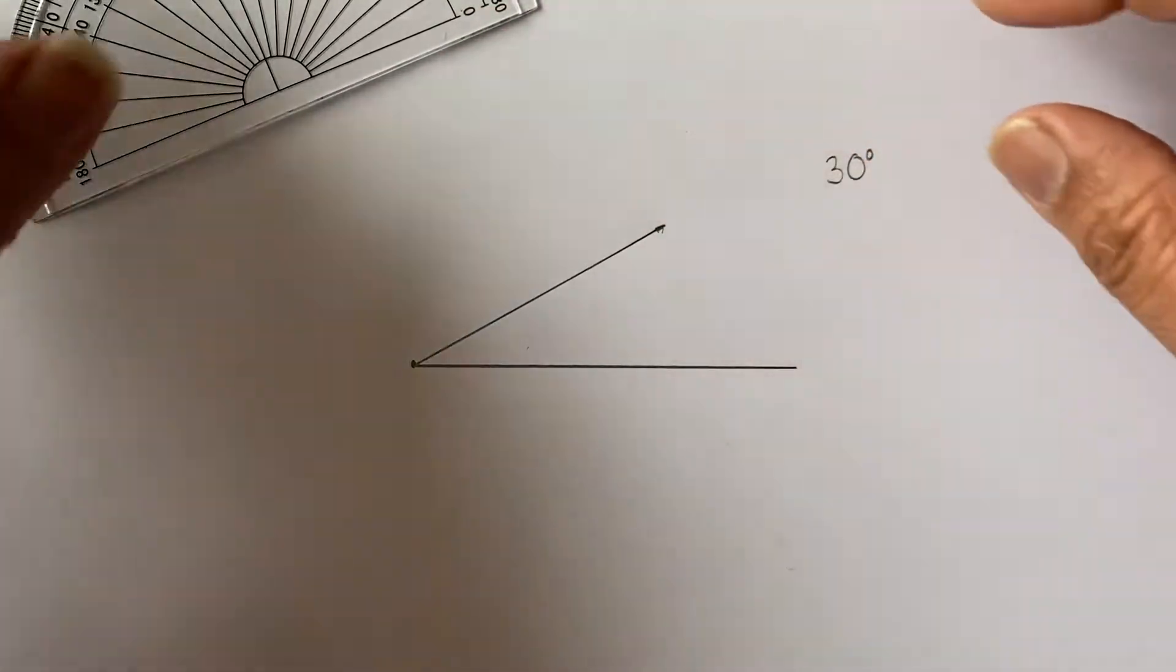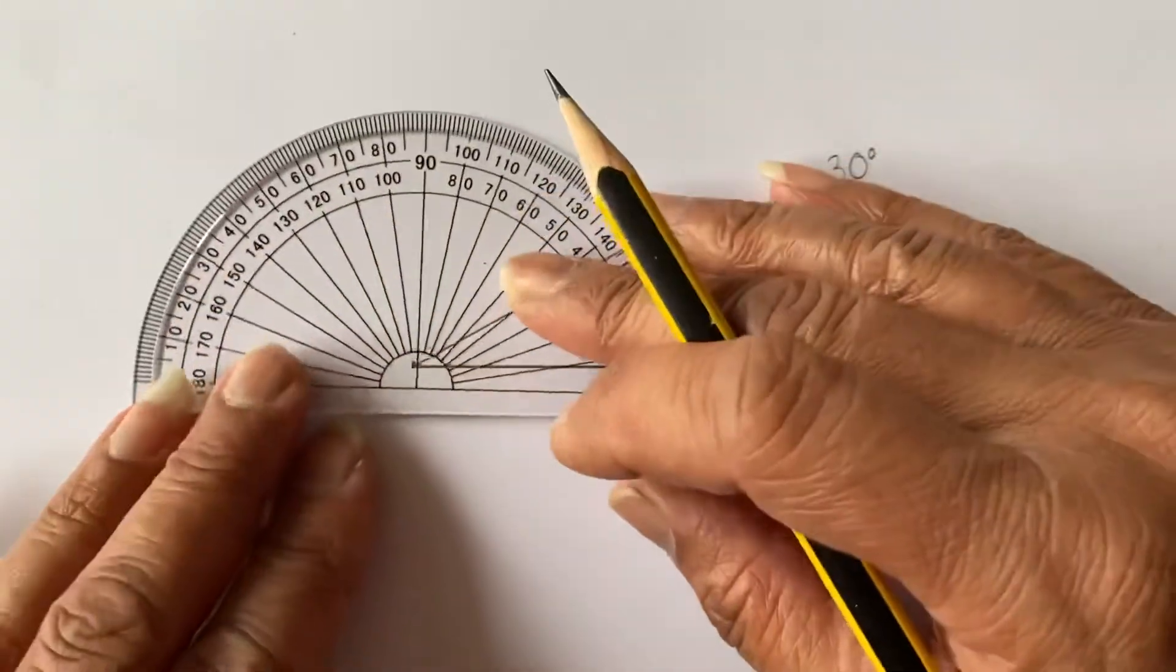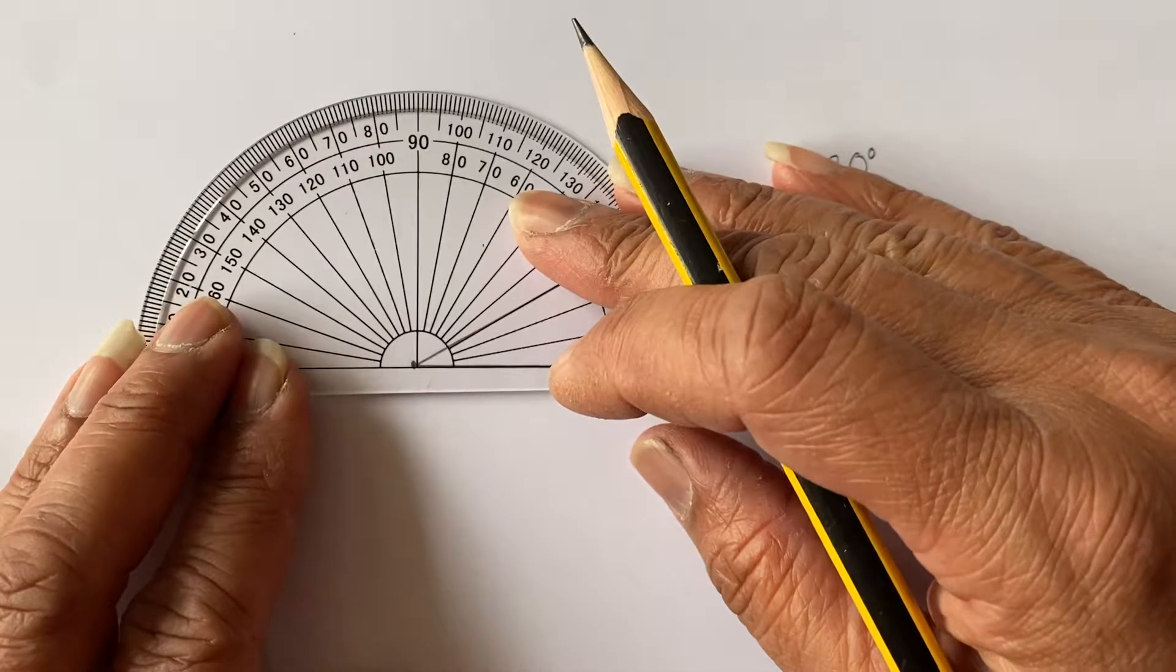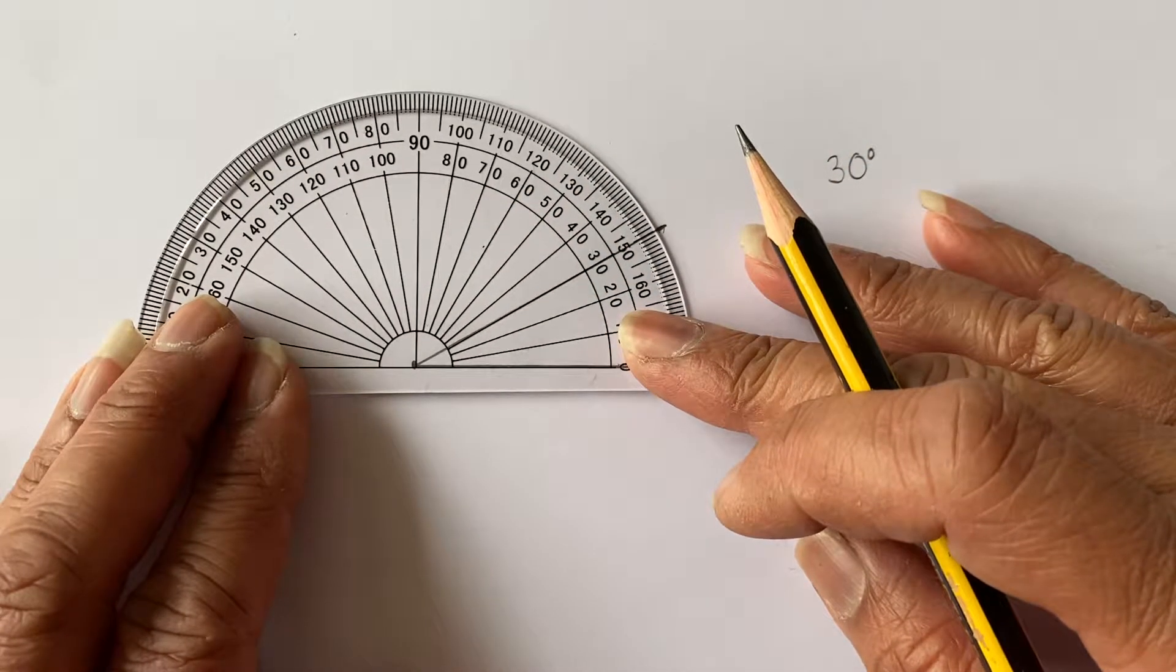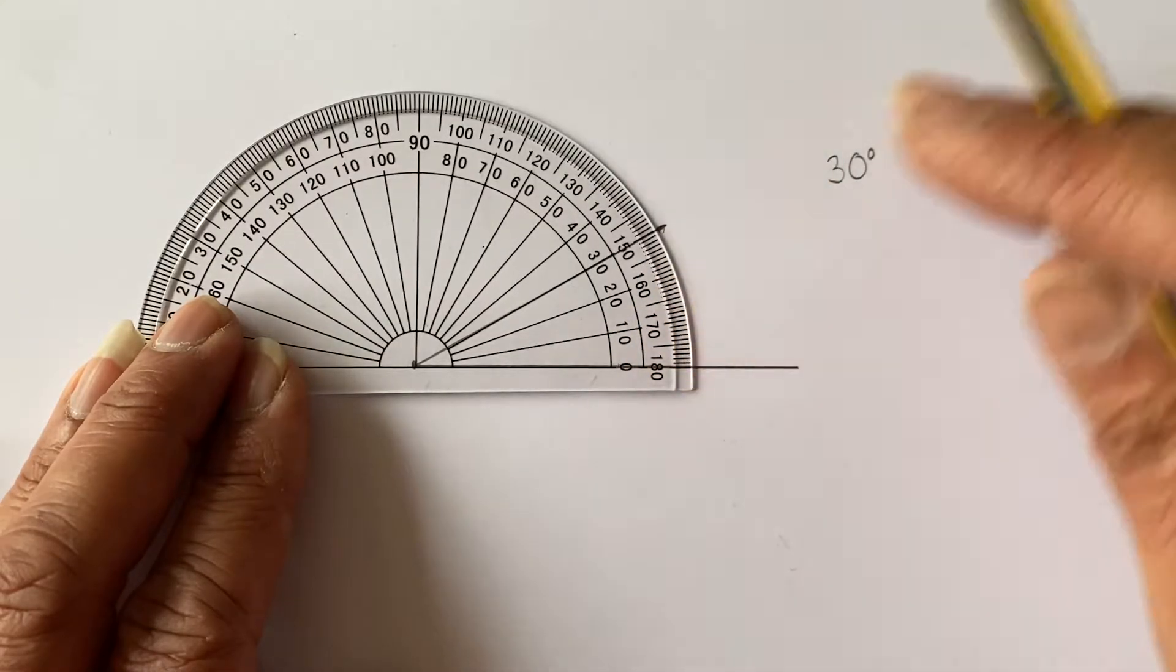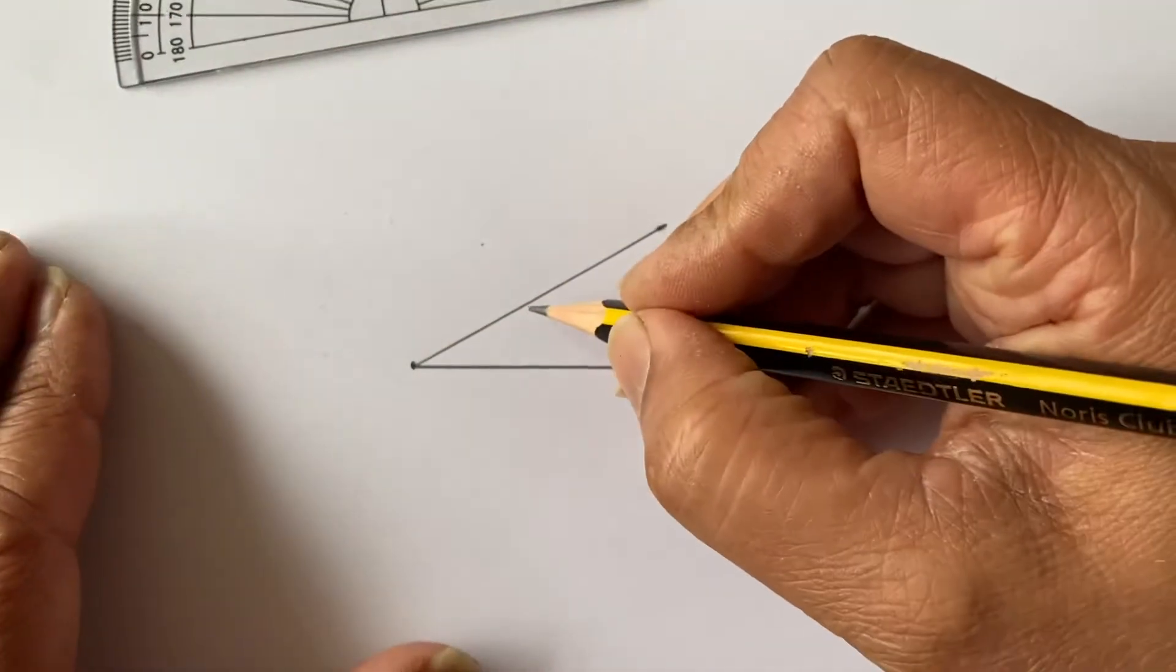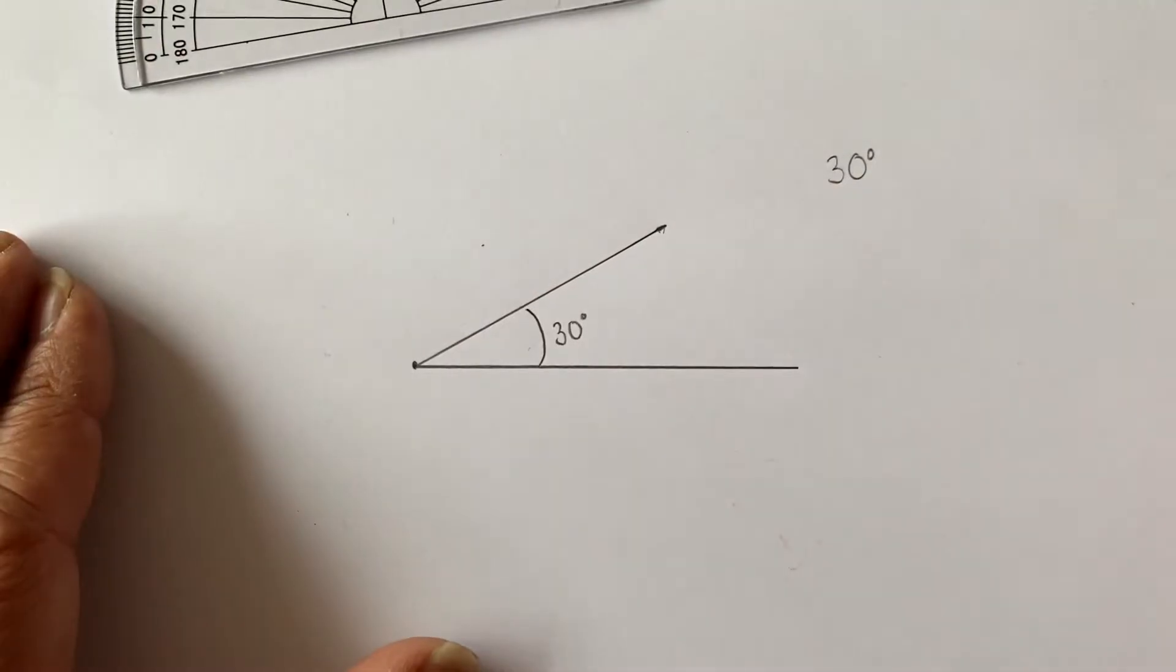So now if I was to measure this just to double-check, I need to make sure that it's sitting on the dot and sitting on the line, and it should read 30 degrees and it has. Perfect. I've done a good job there. So I can now label this as 30 degrees.